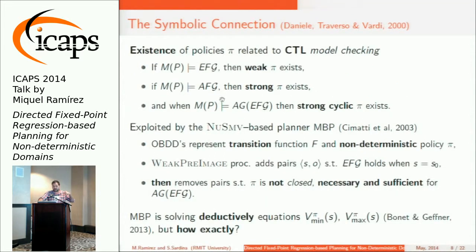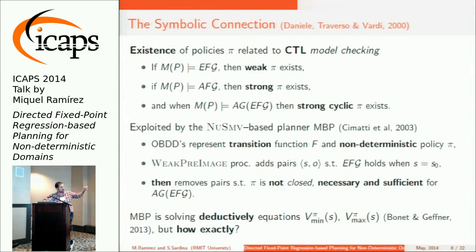From these three categories, Traverso and Bardi 14 years ago established what they call the symbolic connection: you can check the existence of these policies over a given non-deterministic model as a task of model checking over computational tree logic. For each of the three kinds of policies — weak, strong, and strong cyclic — we have statements in CTL which are true. For instance, if a weak policy exists, then eventually at some point in the future when executing that policy, we will be reaching the goal.